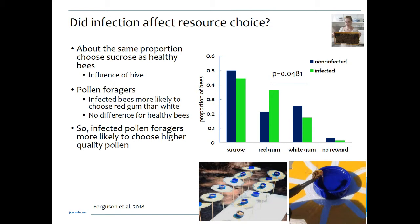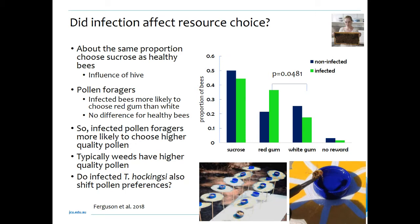So infected pollen foragers are more likely to choose higher-quality pollen, at least in Apis mellifera — we don't know what Tetragonula does. One implication is that weeds are typically thought to have higher-quality pollen, so sick bees might select weeds over native vegetation. The obvious question is whether our native stingless bees show the same kind of behaviour. There is obviously a lot more work to be done in this area.